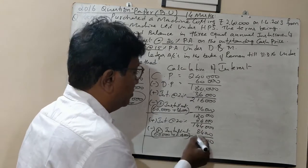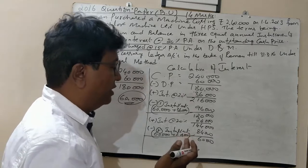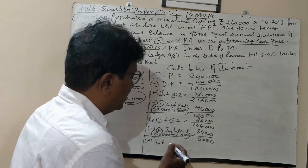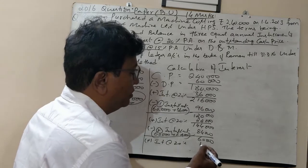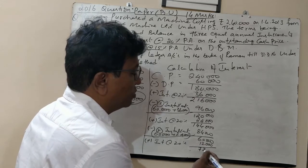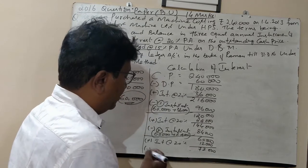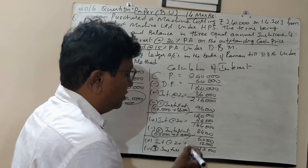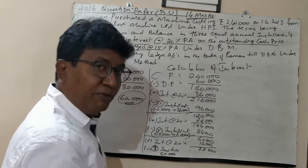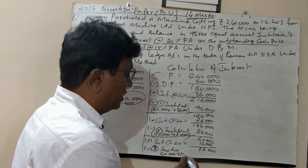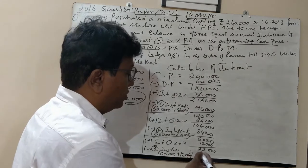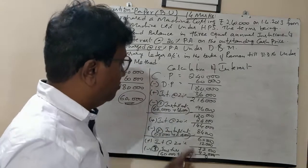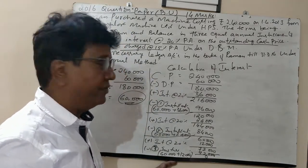This ₹60,000 is the amount left at the beginning of the third year. Calculate interest again at 20%, which comes to ₹12,000. So the total becomes ₹72,000. Deduct the third installment: ₹60,000 cash price plus ₹12,000 interest equals ₹72,000. At the end of the third year, the balance becomes zero. This is how we calculate the interest.